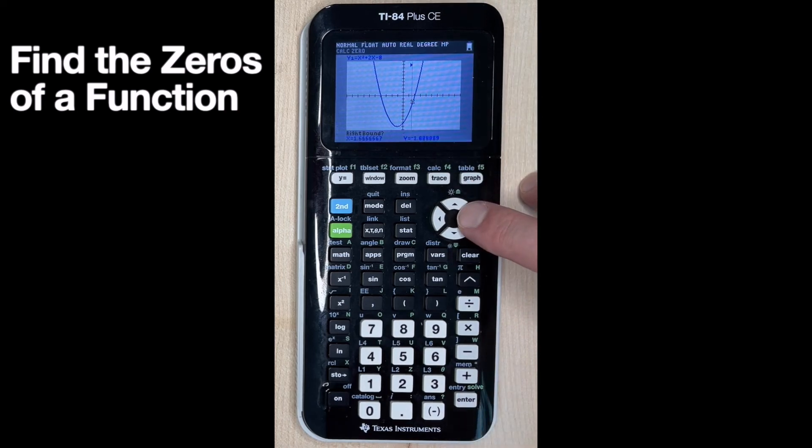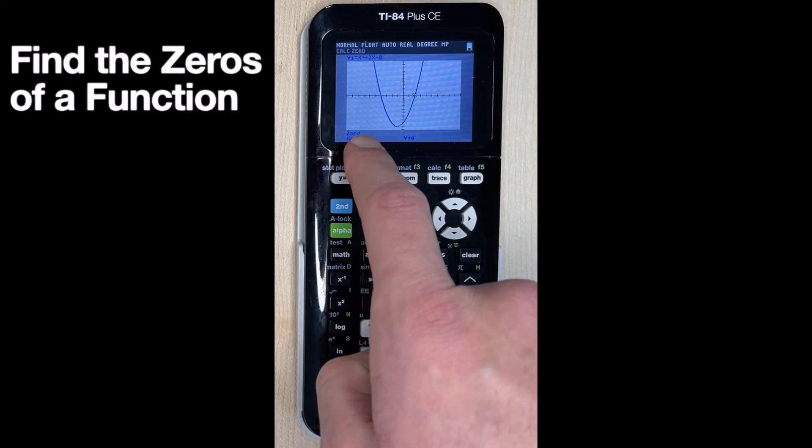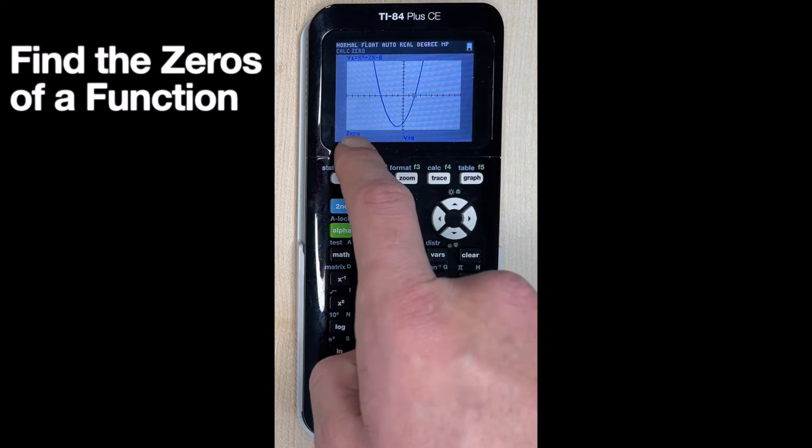Now it says right bound. So we go above the x-intercept. We hit enter again. And once it says guess, we hit enter one last time. And now it gives us x is equal to two. So this would be like two comma zero. So our answer would be two.